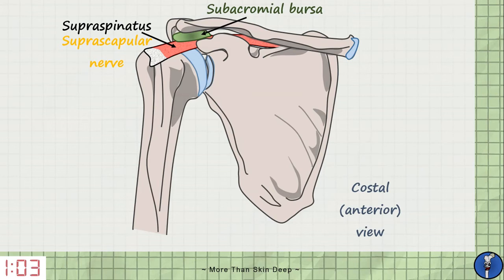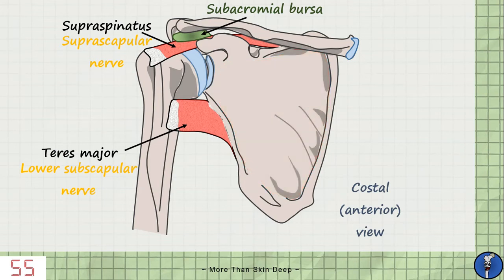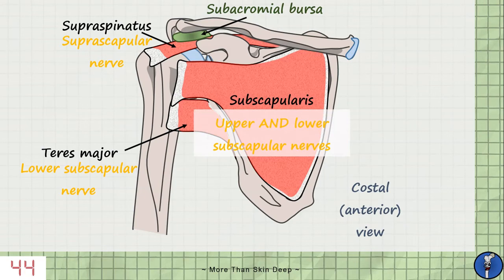We also of course have teres major poking through. And our last muscle comes from the subscapular fossa. No prizes for guessing its name. The subscapularis muscle attaches to the lesser tubercle of the humerus to internally rotate the arm. Its big belly means it is innervated by both the upper and lower subscapular nerves.